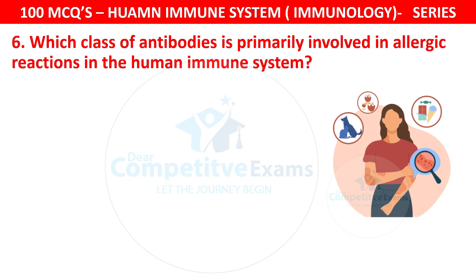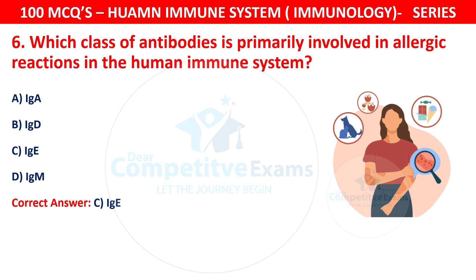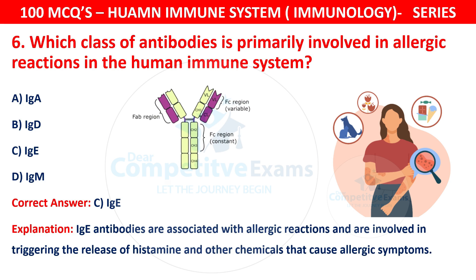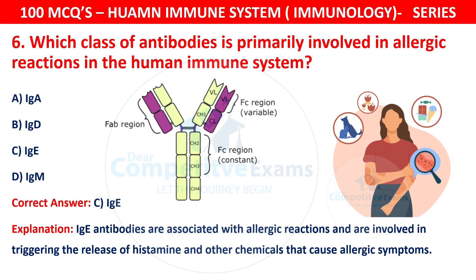Question 6. Which class of antibodies is primarily involved in allergic reactions in the human immune system? Your options are IgA, IgD, IgE, or IgM. The correct answer is C — IgE. IgE antibodies are associated with allergic reactions and are involved in triggering the release of histamine and other chemicals that cause allergic symptoms.